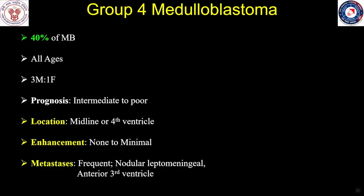Group 4 medulloblastomas are the most common form, comprising about 40% of medulloblastomas. These can be encountered in all age groups and are three times more common in boys than girls. Prognosis is intermediate to poor. Classically located in the midline or in the fourth ventricle, enhancement is none to minimal. These medulloblastomas are frequently associated with metastasis and are known to have nodular leptomeningeal metastasis. A classic site of metastatic deposition is the anterior third ventricle or suprasellar system.